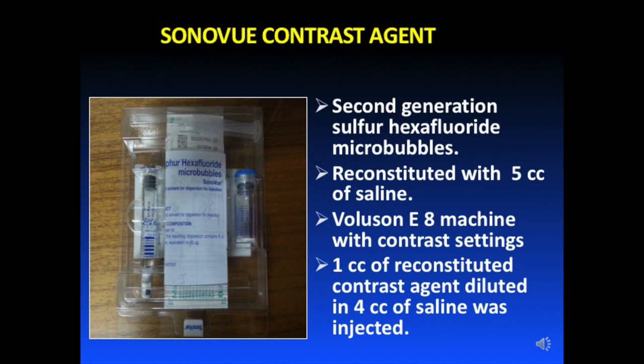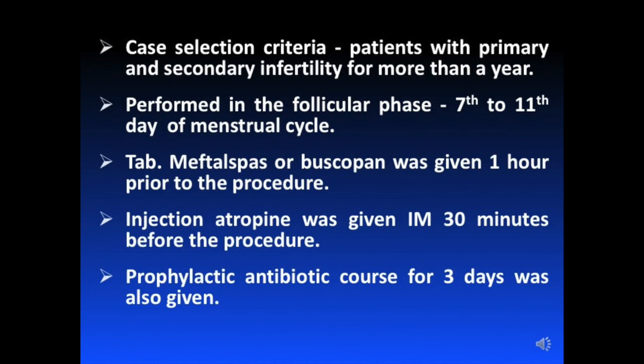1 cc of the reconstituted contrast agent was diluted in 4 cc of saline and injected into the uterine cavity. The case selection criteria was patients with history of primary and secondary infertility for more than a year, performed in the follicular phase between the 7th to 11th day of the menstrual cycle. A painkiller and antispasmodic such as tablet Meftal Spas was given one hour prior to the procedure, intramuscular atropine 30 minutes before, and prophylactic antibiotic Augmentin for 3 days was also given.